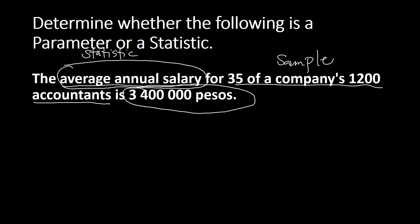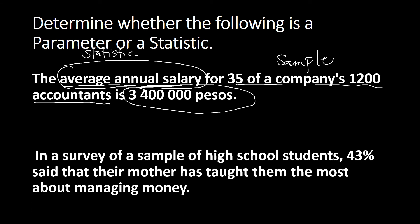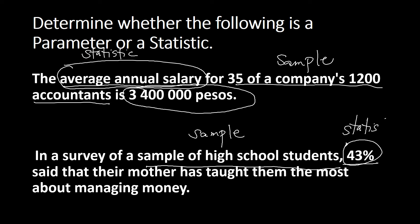Next example: In a survey of a sample of high school students, 43 percent said that their mother taught them the most about managing money. The descriptive measure here is 43 percent — a percent or proportion can also be a descriptive measure. It is describing the sample of high school students. Because the word 'sample' appears, this is a sample, and so we call that descriptive measure a statistic.